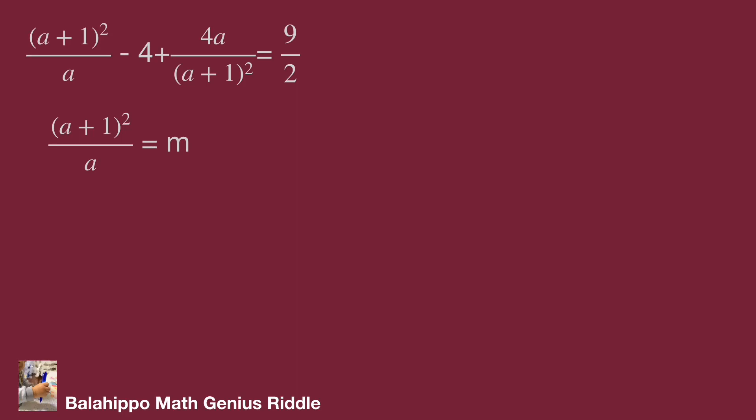So we define (a + 1)² over a equal to m. Therefore the equation becomes m - 4 + 4 over m equal to 9 over 2.